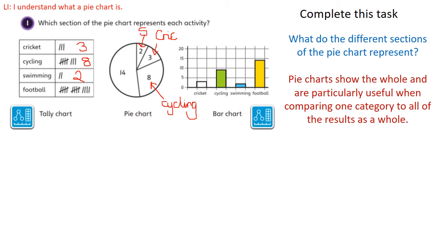And finally, let's double check this. We have 14 for football, so therefore this section must be football on the pie chart.